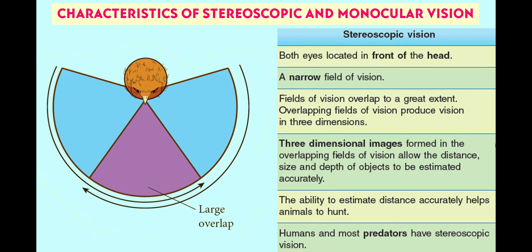The ability to estimate distance accurately helps the animals to hunt; hence most predators and humans have stereoscopic vision.